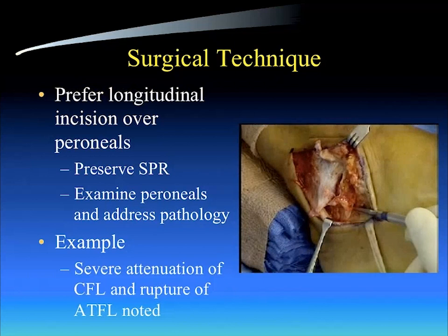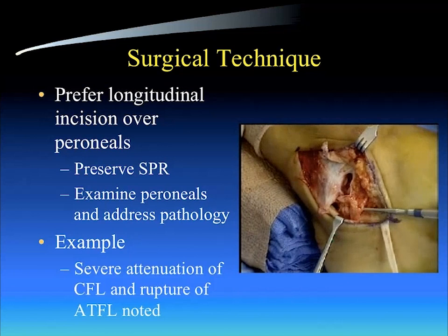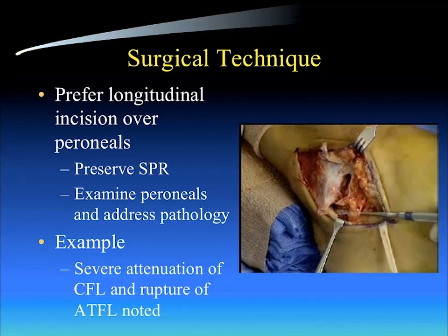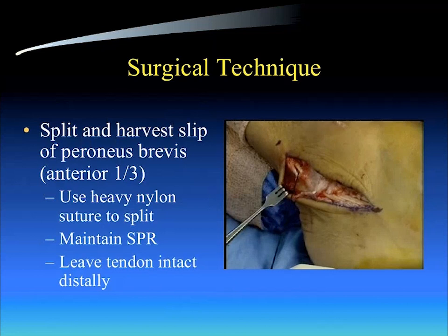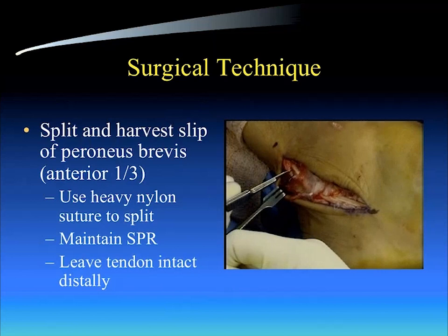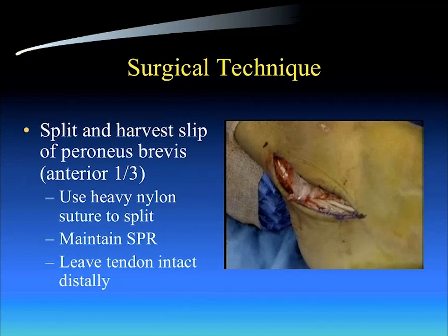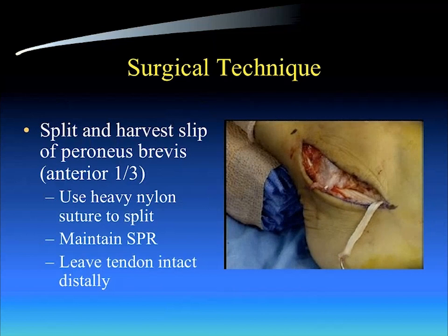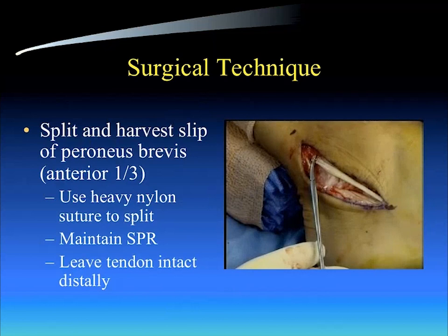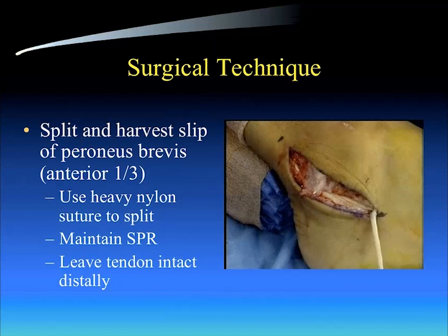Let me walk you through the surgical technique. I prefer a longitudinal incision over the peroneal tendons. I preserve the superior peroneal retinaculum in all individuals, as long as there's no evidence of peroneal subluxation. We examine the peroneals and address the pathology — in this image on the right, there's severe attenuation of the calcaneofibular ligament and a complete rupture of the anterior talofibular ligament. We harvest the anterior third of the peroneus brevis using a heavy number two nylon suture as a kind of giggly saw to split the tendon, delivered out distally where it's still attached to the base of the fifth metatarsal, without violating the superior peroneal retinaculum.